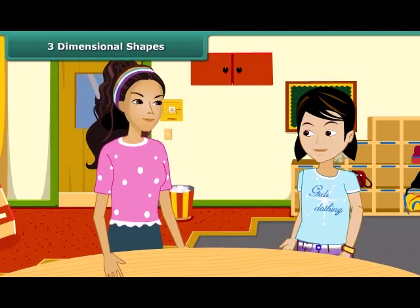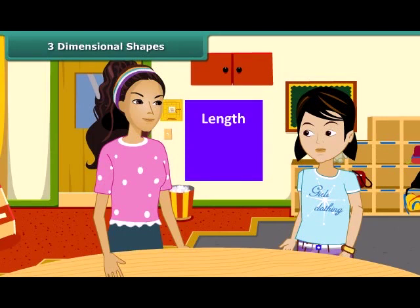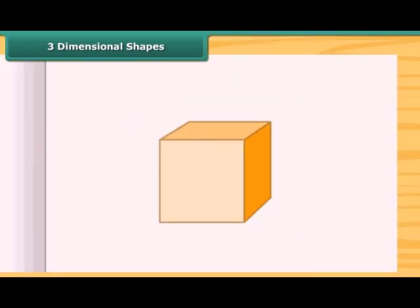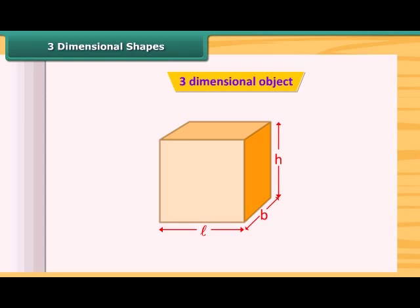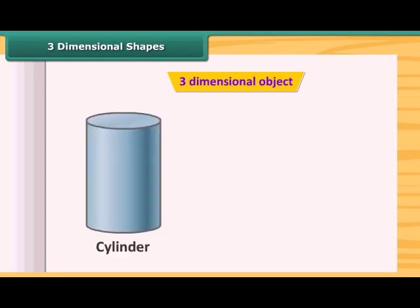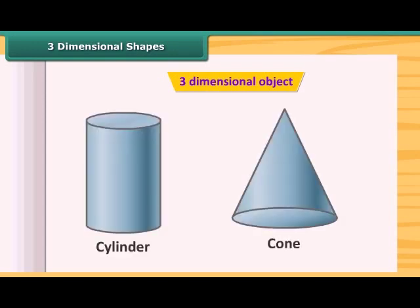What are three-dimensional shapes? A solid object having three measurements like length, breadth, and height are called three-dimensional objects. Look at this cuboid — it has length, breadth, and height, so this is a three-dimensional object. The cylinder, cone, etc. are three-dimensional figures.